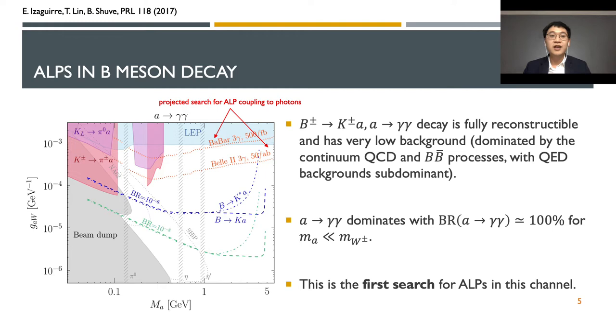The figures shown here present the existing limit of axion-like particles coupling with W boson. Our goal is to fill up the empty space and get the branching fraction limit up to 10 to the minus 6 as predicted with the blue line. Also note that for the axion mass below 0.1 GeV, all smaller regions are excluded, so we would start our search at 0.1 GeV and go forward.